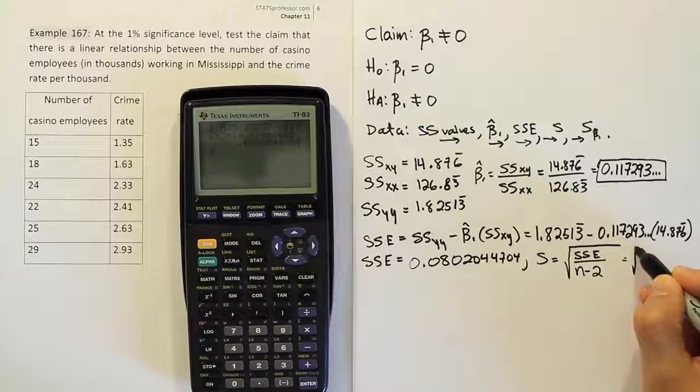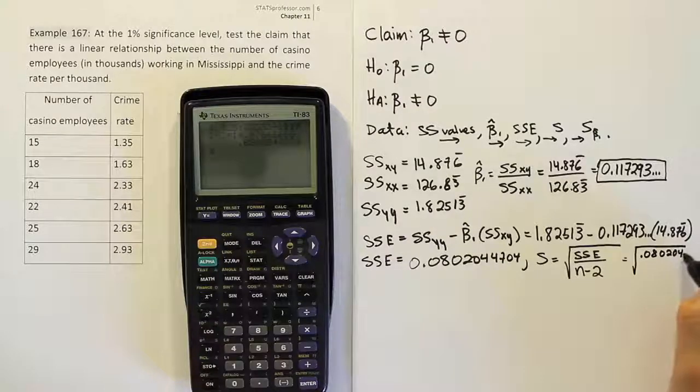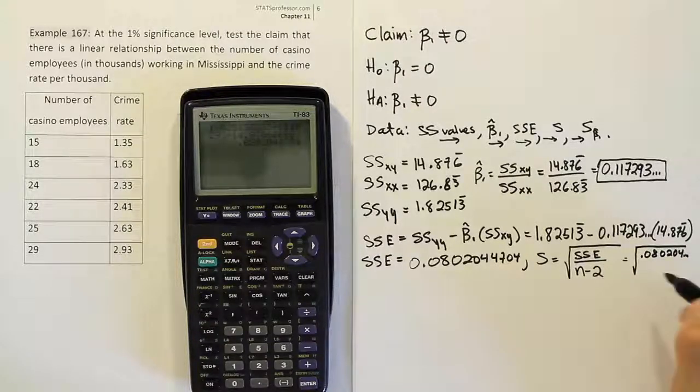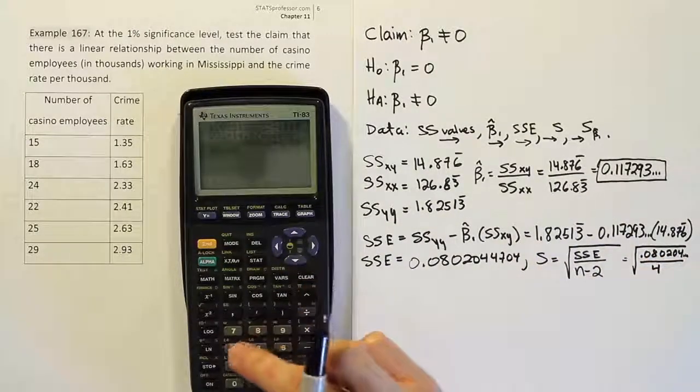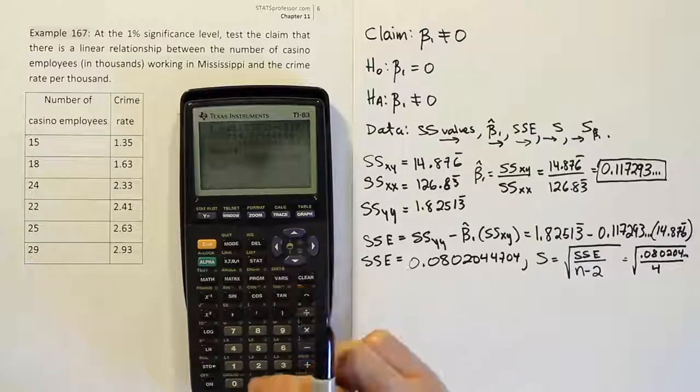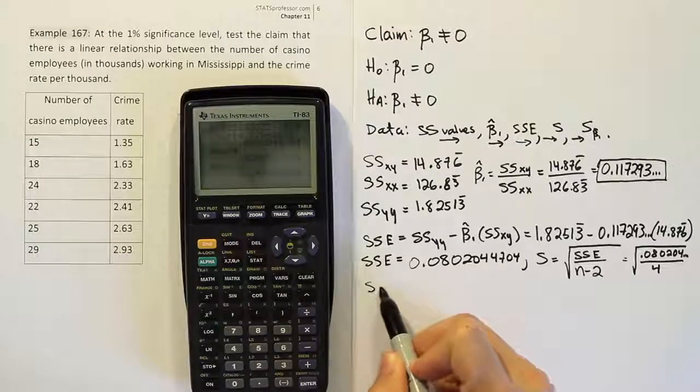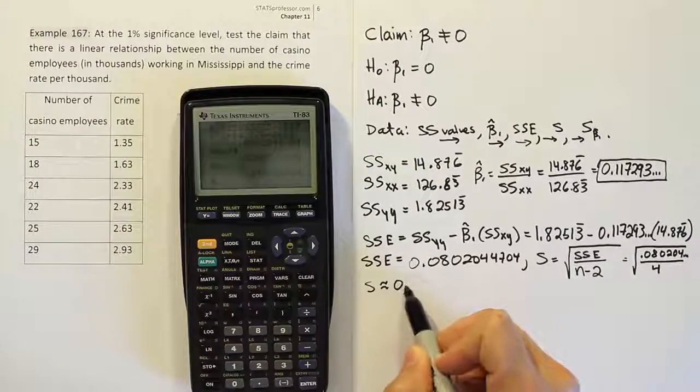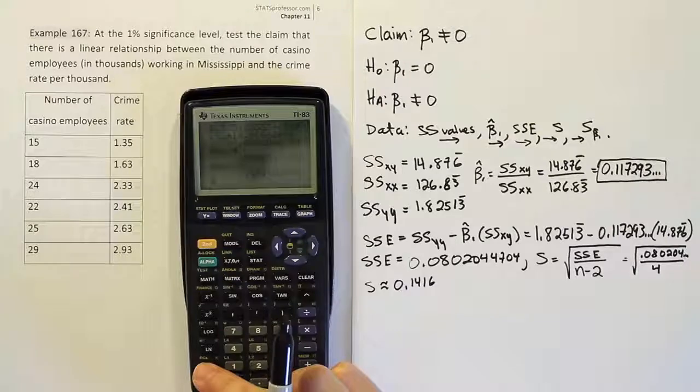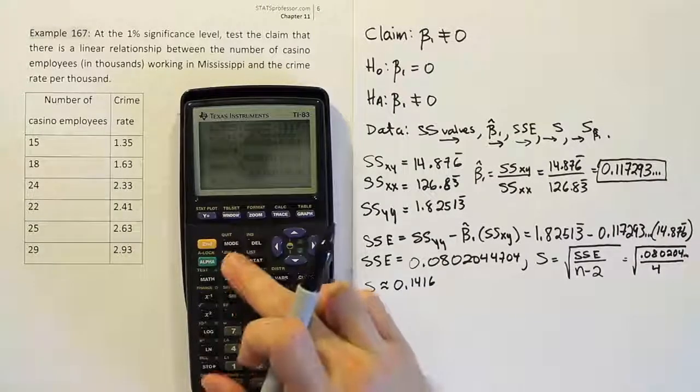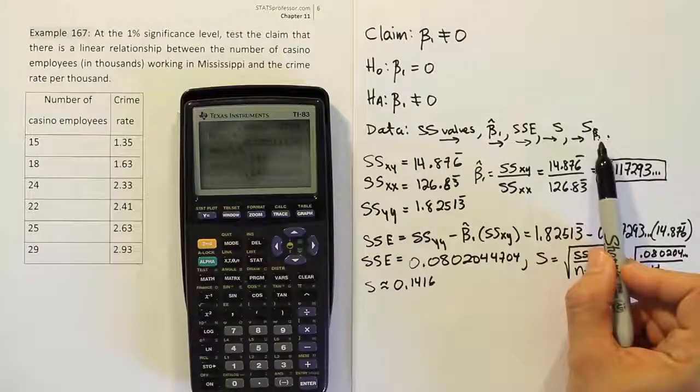So when we fill in our fraction, it's going to end up being the square root of this value that we have here, the 0.080204 dot dot dot value, divided by 6 take away 2, which is 4. So in my calculator, I'm just going to divide that by 4. And when I'm done, I'm going to raise it to the half power, which is the same as taking the square root. And when I'm finished, I find out that S is approximately equal to 0.1416. Now, I'm not going to actually round that. I'm going to go ahead and store that in my calculator briefly. So I'll store it in my calculator as X, just so I have it.